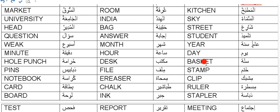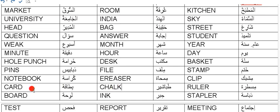Salla means basket. Maktab, desk. Kharamah means hole punch or hole puncher - that is what we use to make holes in paper. Khatam, the stamp. Milaf, file. Mishbak, clip. Mimha, eraser - that which students use for erasing. Kurasah, notebook. Mistra, ruler. Tabashir, chalk - there is one medicine also in herbs called Tabashir. Bitaqa, card. Dabasa means stapler.